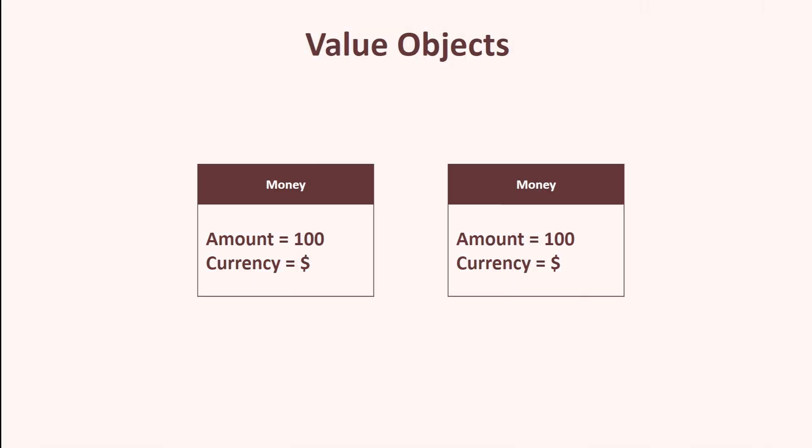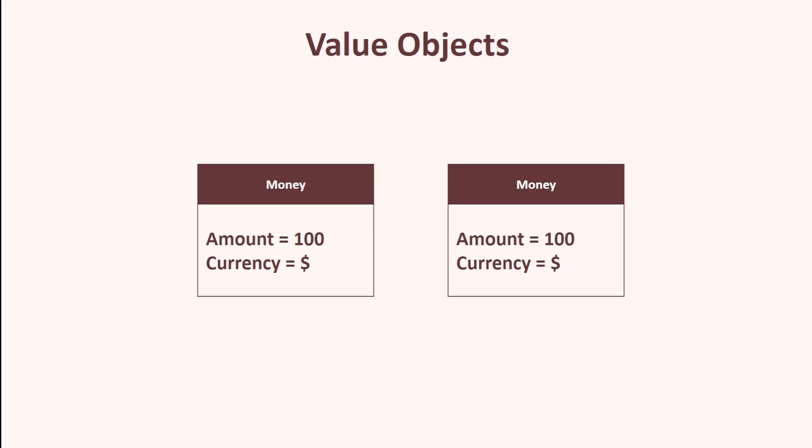Value objects do not have any concept of identity of their own. A value object is defined by its attributes. Two value objects are considered equal if all their attributes are equal. Value objects are typically immutable — any change in an attribute results in a new instance of the value object.